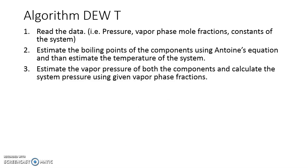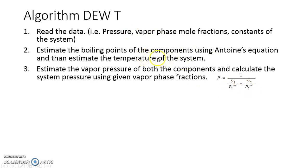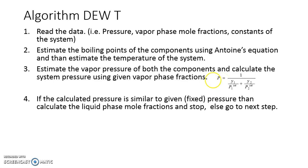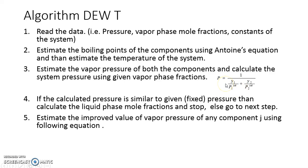Next is Dew T, where instead of liquid phase mole fractions we have vapor phase mole fractions specified along with pressure. We estimate the boiling points of each component using Antoine's equation, then estimate initial temperature as T0 = Σ(yi·Ti_sat) = y1·T1_sat + y2·T2_sat. We calculate P1_sat and P2_sat at this estimated temperature and compute P_calc from the given vapor phase fractions. If P_calc equals the fixed pressure we stop; otherwise we proceed.